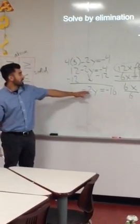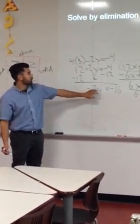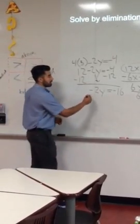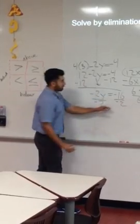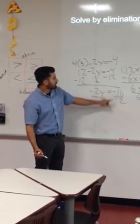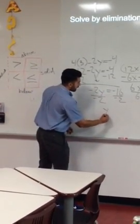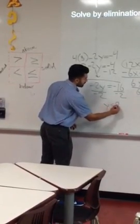Now I'm going to divide by the number in front of my letter so by my coefficient and my variable and I'm going to divide by negative two. So divide by negative two. A negative divided by negative gives me a positive. So y equals positive eight.